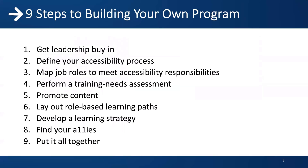So how do you go about building your program? There are nine different steps we'll cover today: getting leadership buy-in, defining your accessibility process, mapping job roles to accessibility responsibilities, performing a training needs assessment, getting content, creating role-based learning paths, developing a learning strategy, finding your allies, and putting it all together. Now I'll turn it to Ben, who'll start us off.